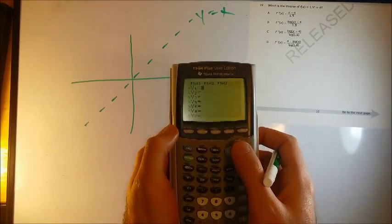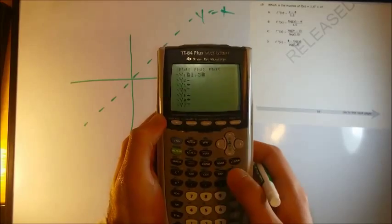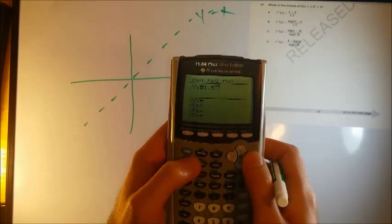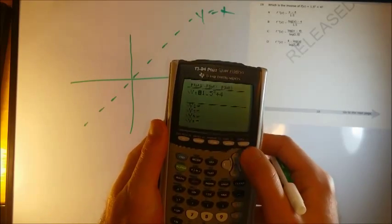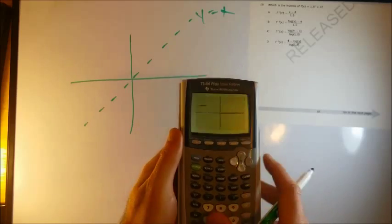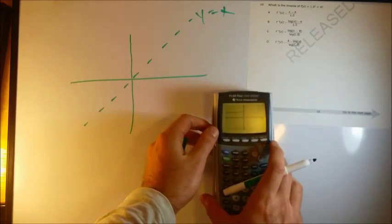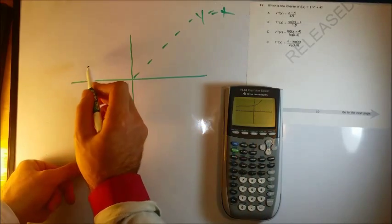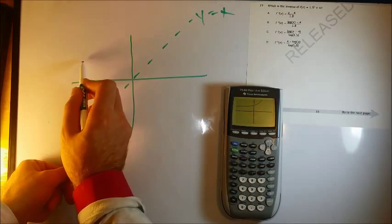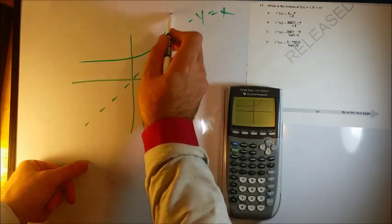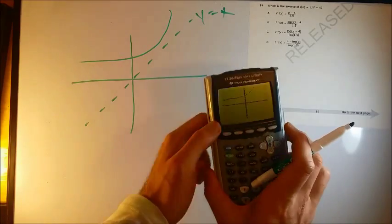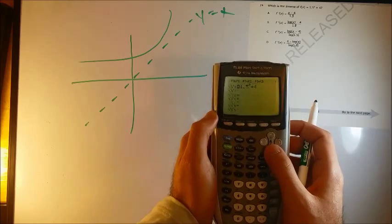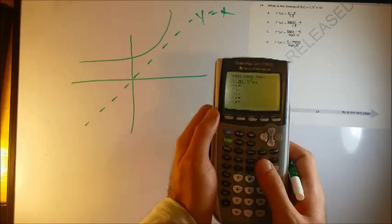So let's just see what that function looks like first of all. Let's just plug that into y equals. So we'll have 1.5 raised to the x plus 4. Graph this. And it looks something like this. And let's just see which of these graphs reflects across the y equals x line from that.